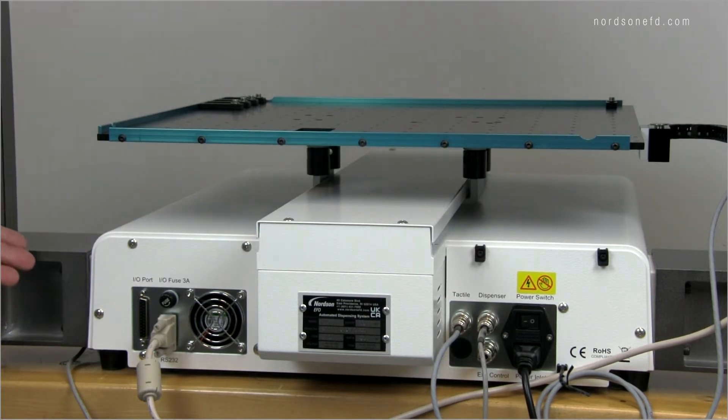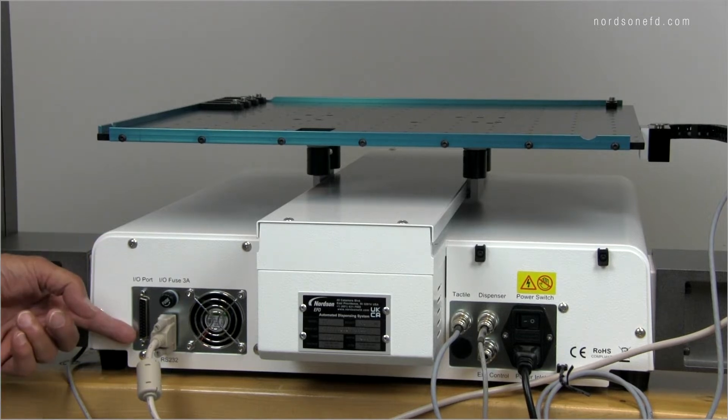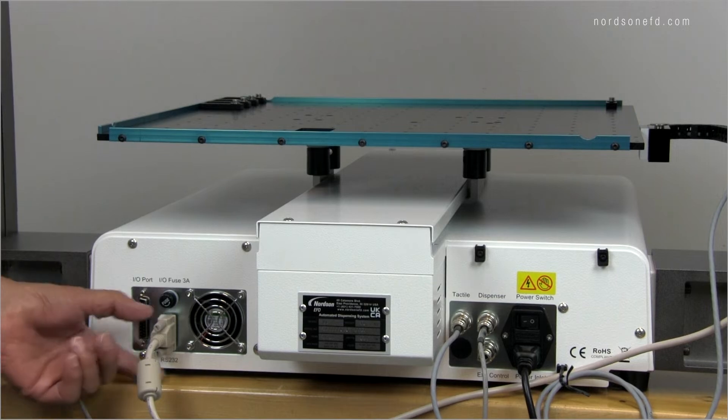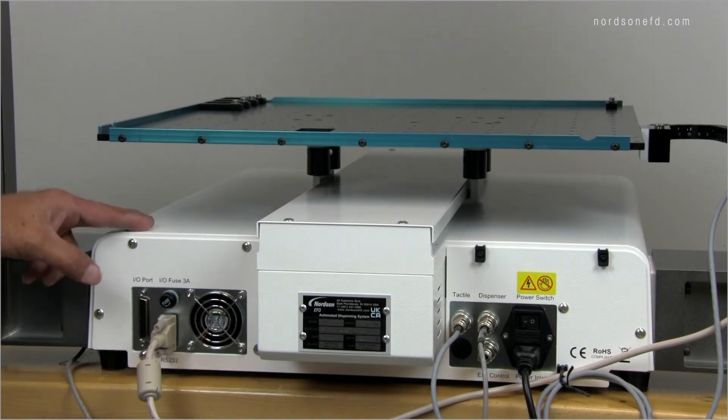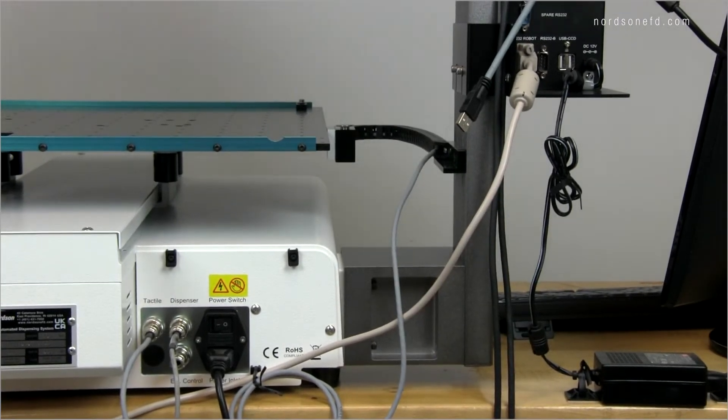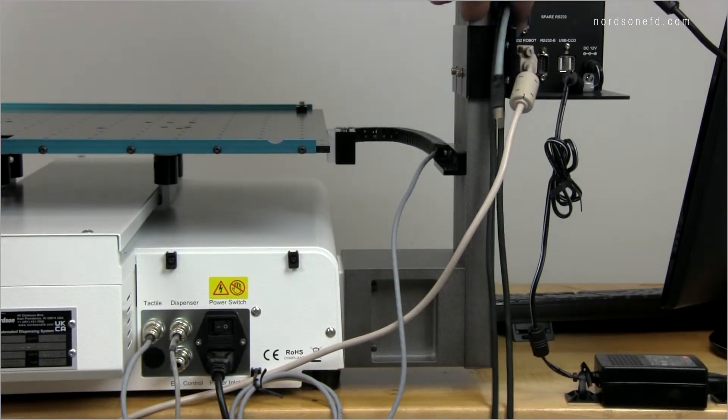So looking at the back of the robot, I'm not using the I.O. port of the robot just yet, but that's where the cable would go for that. This is the RS-232 cable that connects the robot chassis to the dispense motion controller, so it runs from here to the back of the dispense motion controller.